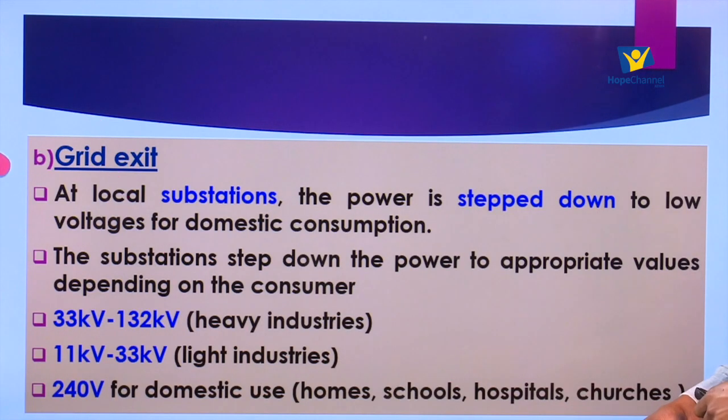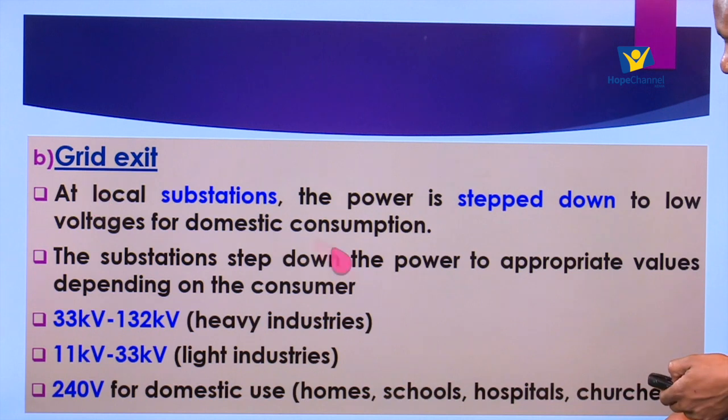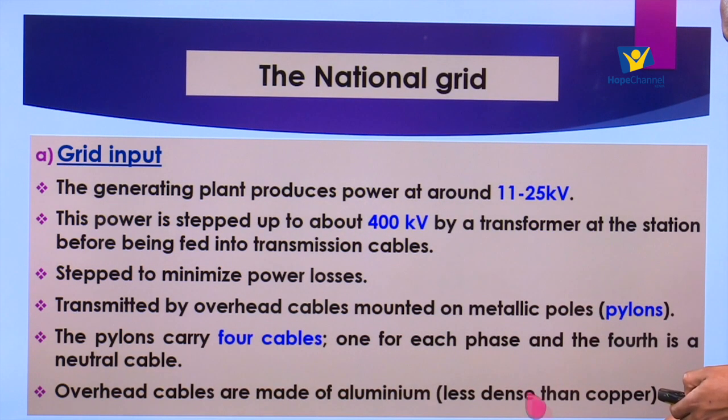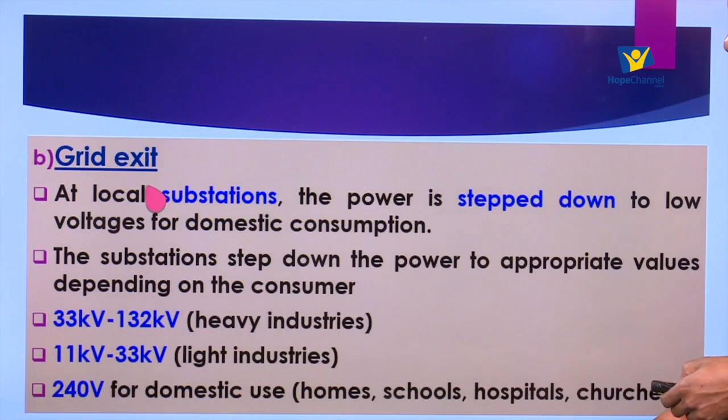After the power enters the grid system through the input, on the other side we have what we call the grid exit. The grid input comprises the pylons with four cables — one for each phase and the fourth being the neutral. At the local substation the power is stepped down, meaning the potential difference is reduced. From the power plant it was stepped up to around 400 kilovolts, but at the substation it is reduced to lower values convenient for domestic consumption.